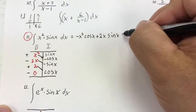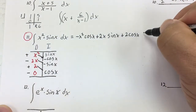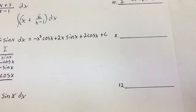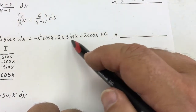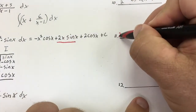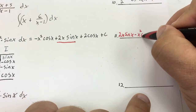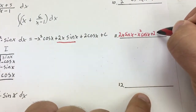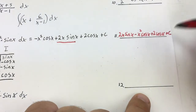And then positive times a positive is plus 2 cosine x, and I'm done, so I'm going to add plus C. Using Occam's razor, I would never have the negative leading first, so I'm going to start off with my 2x sine x. So the final answer is 2x sine x minus x squared cosine x plus 2 cosine x plus C.